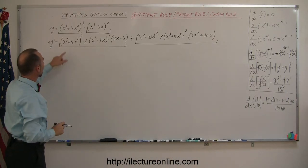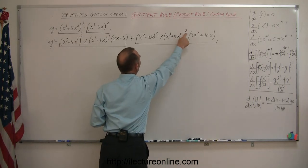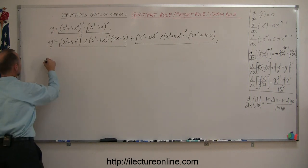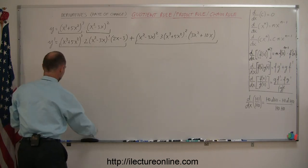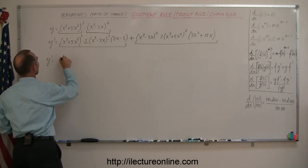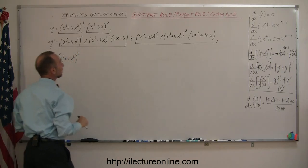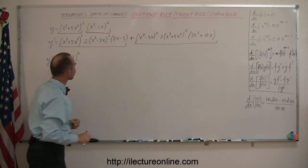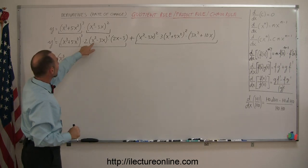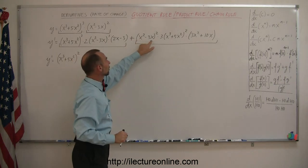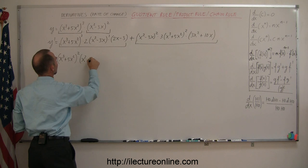What's common here? We have (x³ + 5x²) to the third power and (x³ + 5x²) to the second power, which means we can factor out (x³ + 5x²) to the second power. We have a 2 in one place and a 3 in the other, so those aren't common and can't be factored out. We also have (x² - 3x) to the first power and (x² - 3x) to the second power, which means we can factor out (x² - 3x) to the first power.